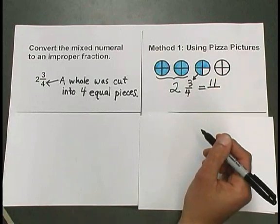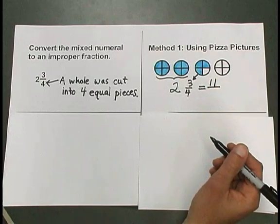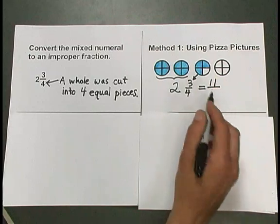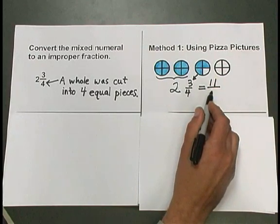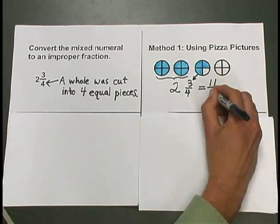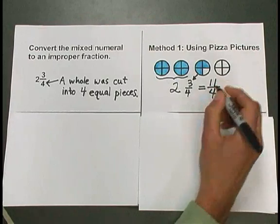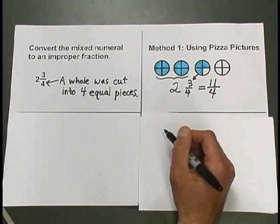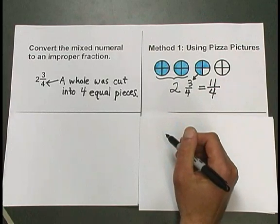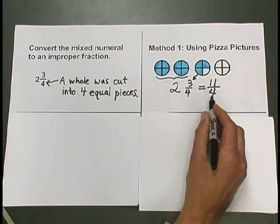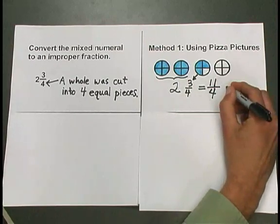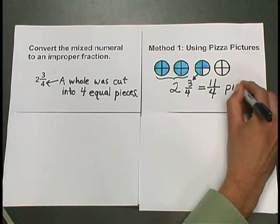So I write 11 on top in the numerator of my fraction. Down below, I'm going to write 4 because each one of those pieces was a fourth of a whole pizza. So we have a total of 11 fourths pizzas.